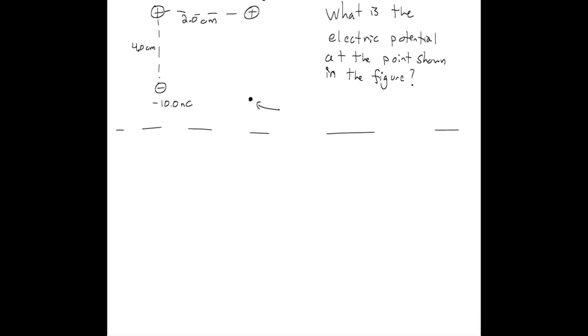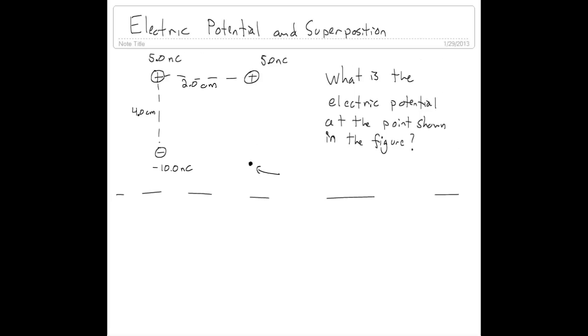We've already got our picture drawn, so we don't have to redraw it. We do however need to draw some things on here, so let's start labeling things for convenience. Let's call Q1 this charge up here, call this charge here Q2, and then the bottom corner charge Q3.